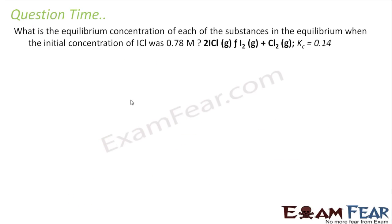Let's take one more question. What is the equilibrium constant for each of these substances at equilibrium when the initial concentration of ICl was 0.78 M? The reaction is 2ICl gives I₂ plus Cl₂ — iodine and chlorine gas — and Kc is 0.14.